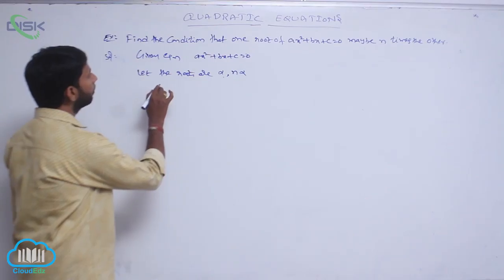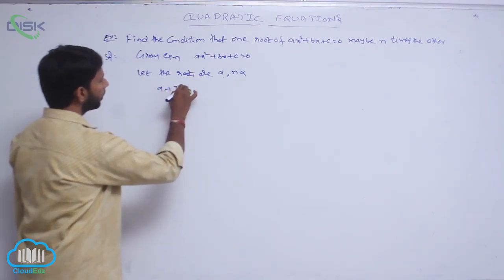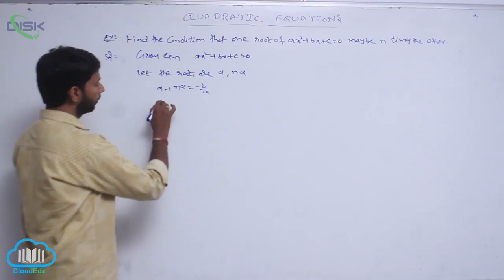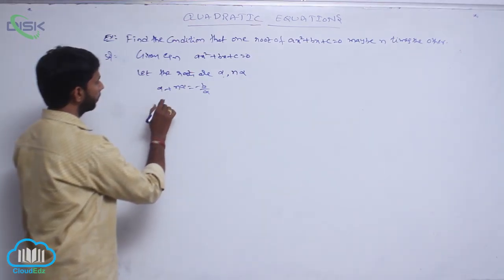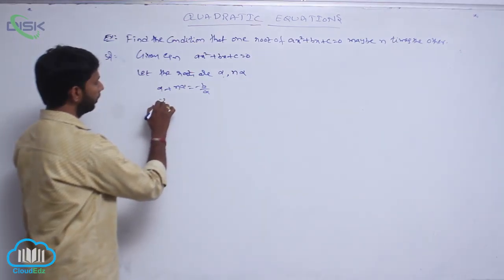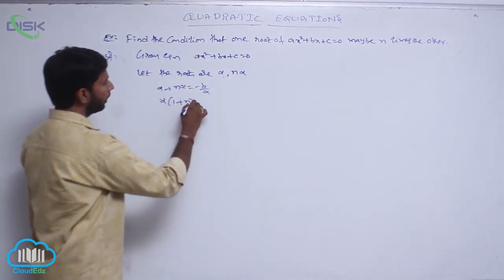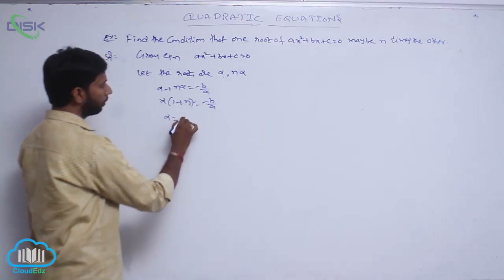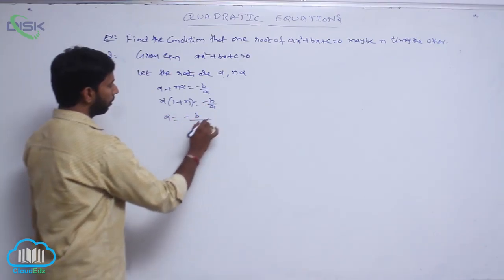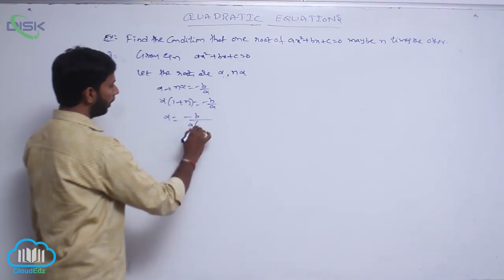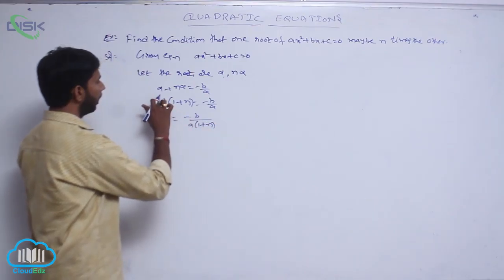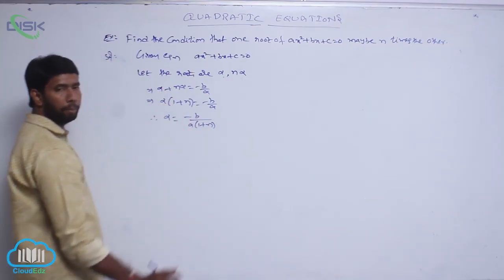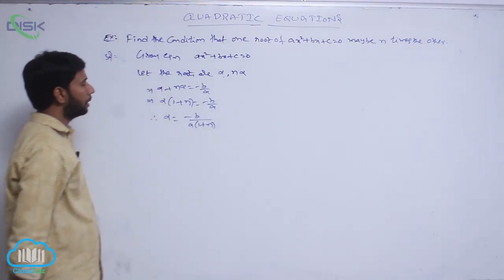First, the sum of roots: alpha + n·alpha = -b/a, that is alpha(1 + n) = -b/a. Therefore, alpha = -b / [a(1 + n)].